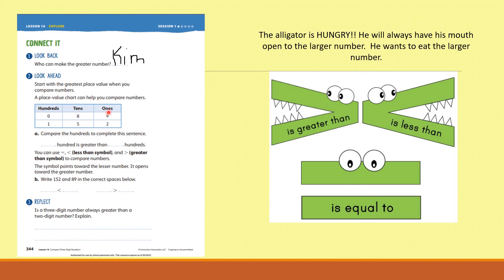Hundreds, tens, ones. Let's look at this place value chart. The first number, zero hundreds, eight tens, and nine ones. What number is that, boys and girls? It is eighty-nine. Alright, let's look at the next one. One hundred, five tens, and two ones. What number can we make from those digits? We can make one hundred and fifty-two. Good job.